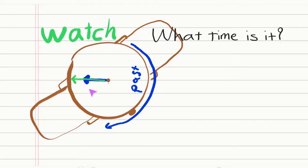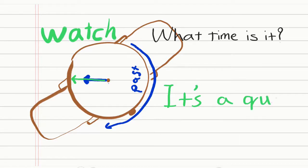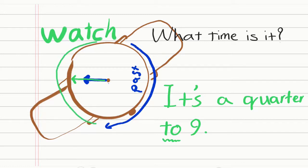Now, what do we call this time? We have a quarter. We say it's a quarter to — for example, 9. Please be careful about these two. For this side, we can use 'to.' So for this part, we use 'past' — for example, a quarter past 9, half past 9, 20 past 9. And for this side, we use 'to' — for example, 20 to 9, 20 to 10, a quarter to 9.